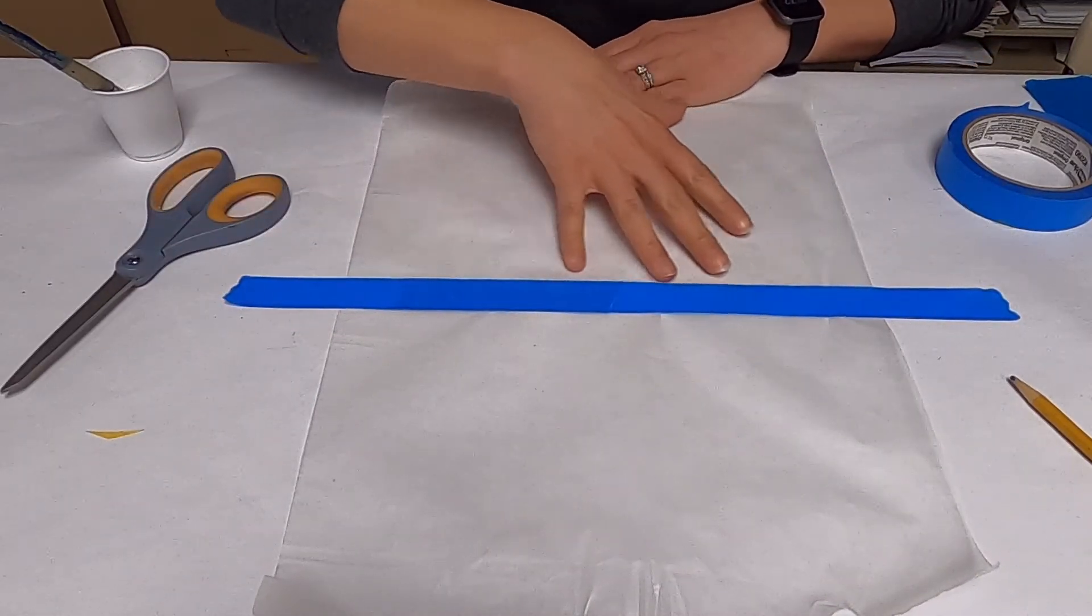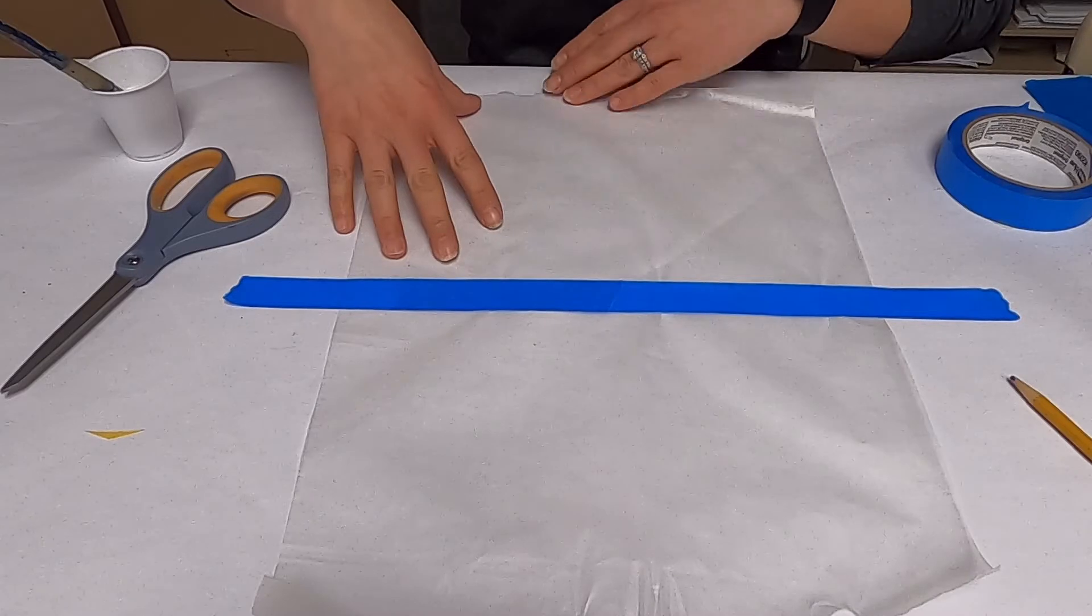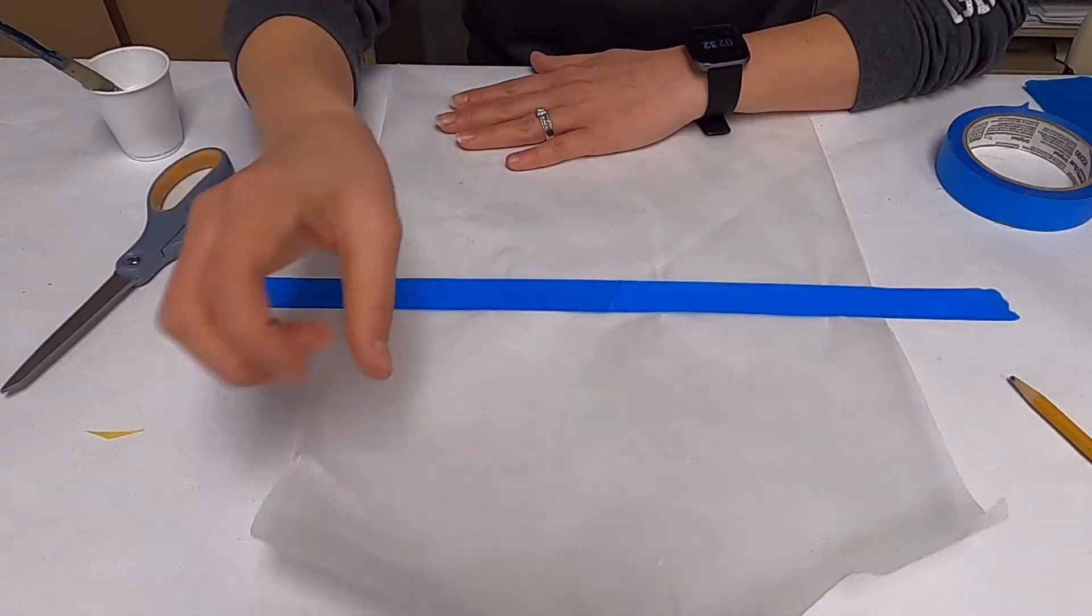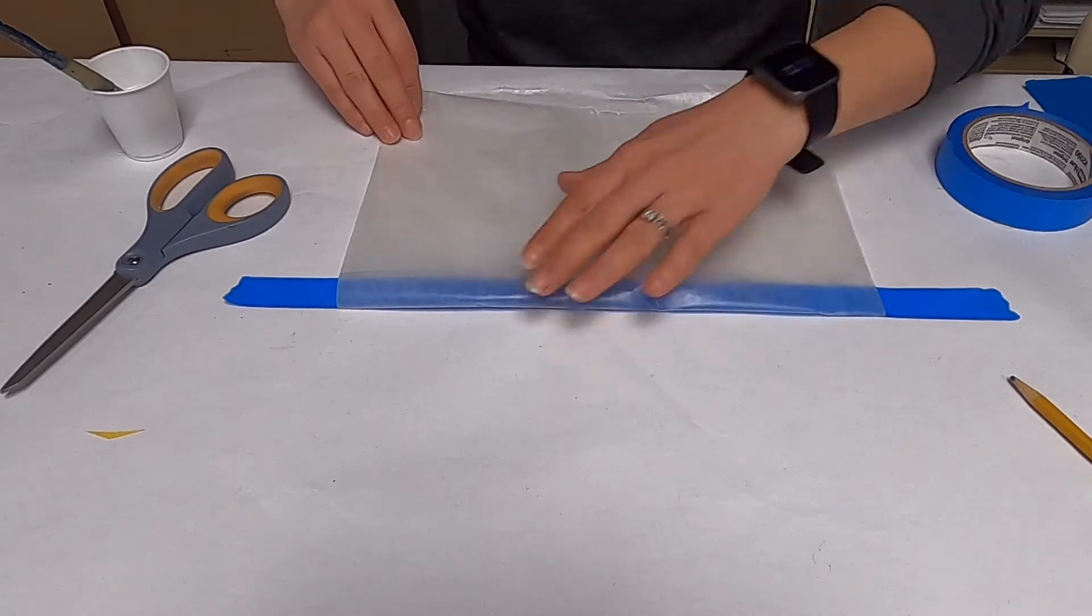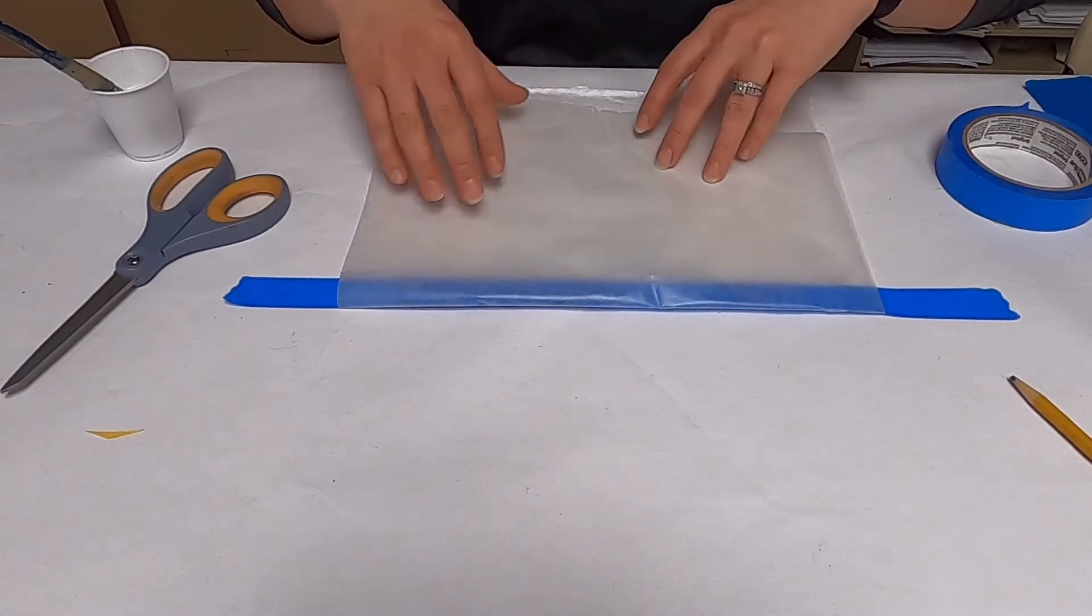I'm going to put the tissue paper right down here, and when I'm done, we'll take this tape off and fold this over on top. It's a way to seal this in.